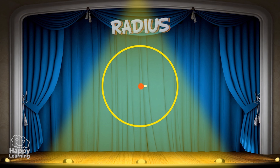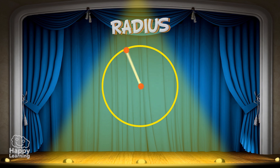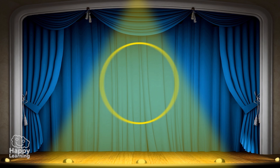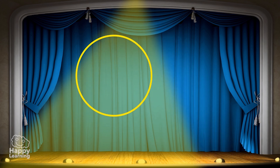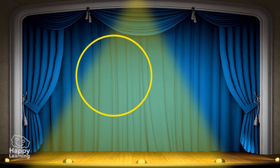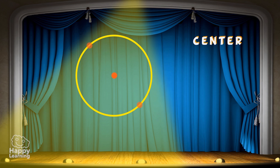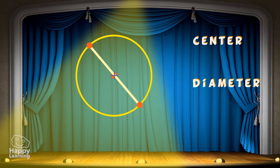The radius of a circle is the distance from the center of a circle to any point on the circle. These are the three most important elements in a circumference: the center, diameter, and radius.